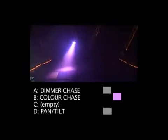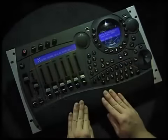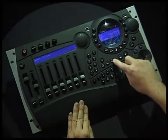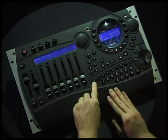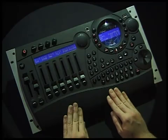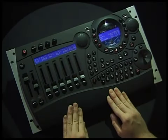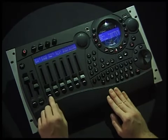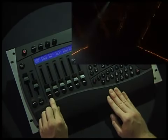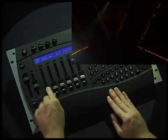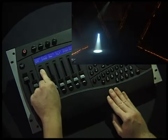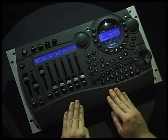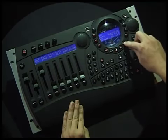To start programming we have to select the first MX10 that has to go into our dimmer chase. We press fixture and then press fixture button 1, which has been patched to our first MX10. Exciter starts the programmer with the first MX10 loaded and ready to be programmed. We want to make a dimmer chase so we locate the dimmer channel. By moving the fader we change the dimmer parameter of the fixture — we want the dimmer at full. The value for the dimmer channel is in the programmer right now, and we want to store it as step 1 in the editor's sequence.